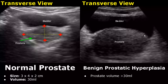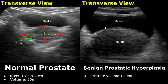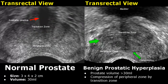Benign prostatic hyperplasia is an abnormal enlargement of the prostate. The prostate volume will be greater than 30 ml. We can see an enlargement of the prostate here. In a transrectal view we can see more detail. BPH occurs in the transition zone and we can see compression of the peripheral zone by the transition zone.